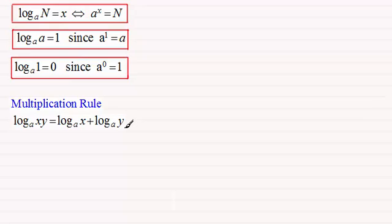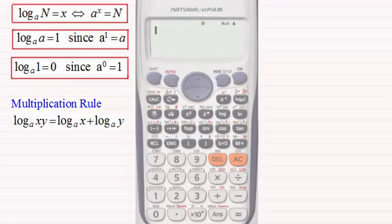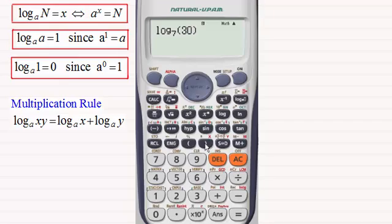I'm giving you this and other rules without any proof — the proofs are in the next video in this series. This can easily be demonstrated on any scientific calculator. Let's say we take the log in base 7 of 30. What do we get? 1.747 etc.